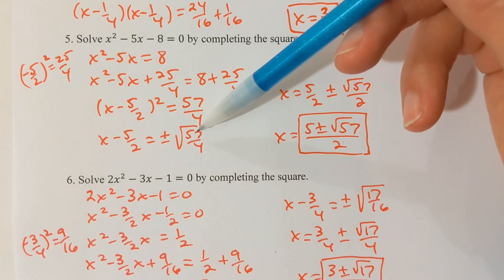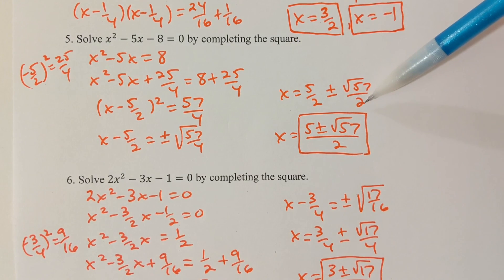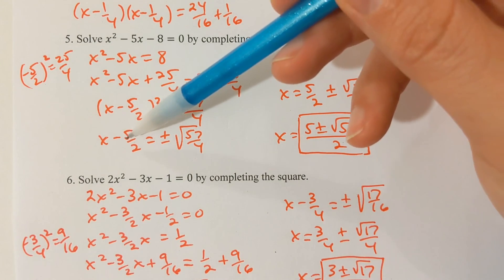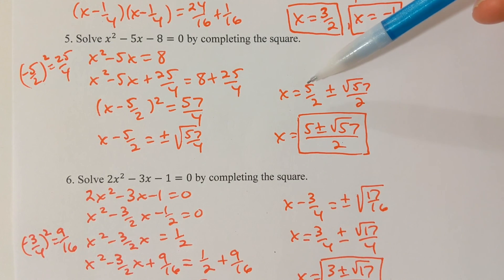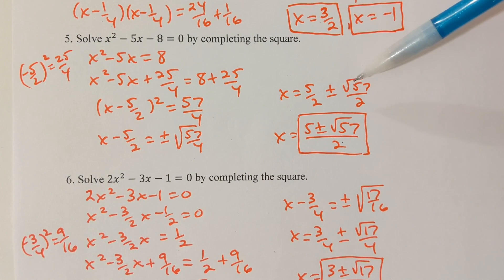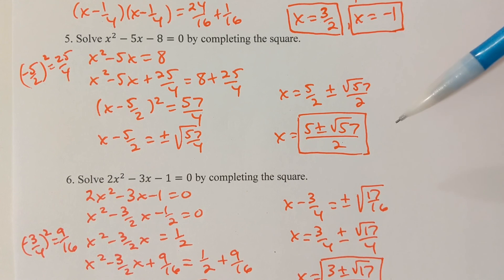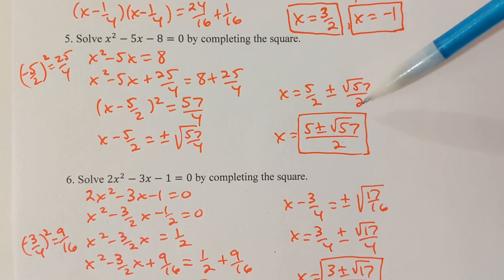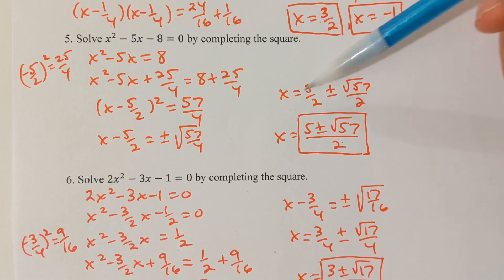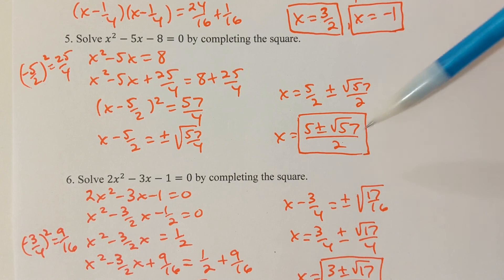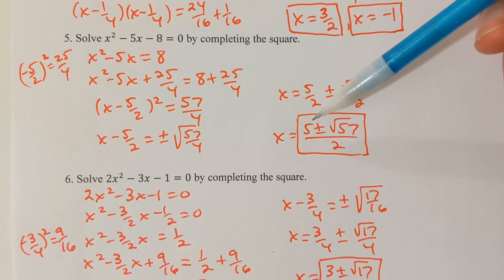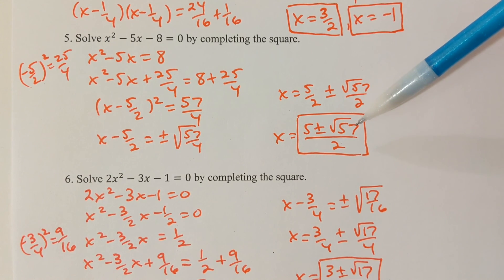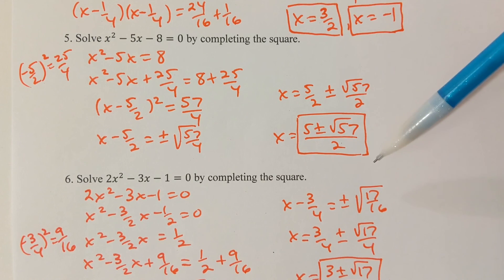If I split this radical, I know the square root of 4 is 2. I'm going to add 5/2 to both sides, so x = 5/2 ± √57/2. With 2 as the common denominator, I can combine this to a single fraction. My two solutions are (5 + √57)/2 and (5 - √57)/2.